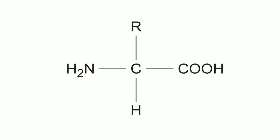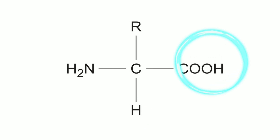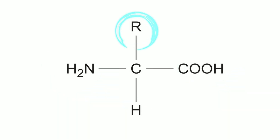This is the basic structure of an amino acid. It consists of a central carbon, also known as the alpha carbon, bonded to a hydrogen atom, an acidic carboxyl group, an amino group, and an organic side chain R.